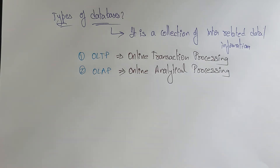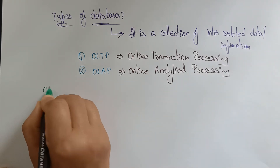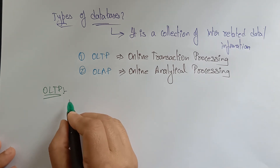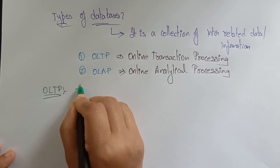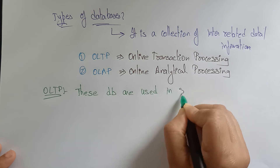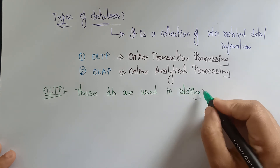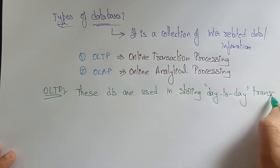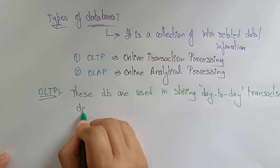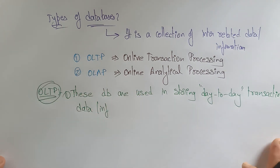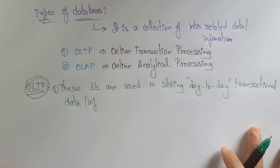Let me explain what OLTP and OLAP are and when we use each one. OLTP — Online Transaction Processing — these databases are used for storing day-to-day transactional data or information. If you want to perform day-to-day operations, then it is better to use OLTP.